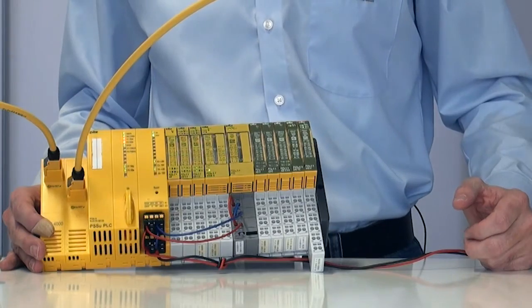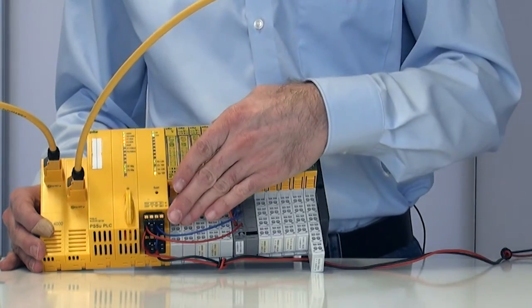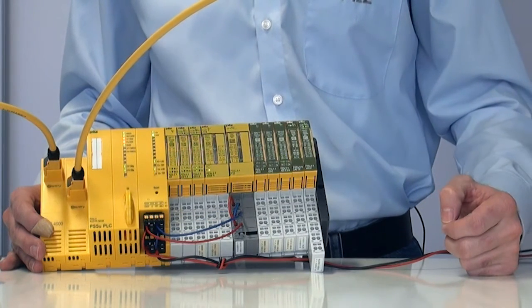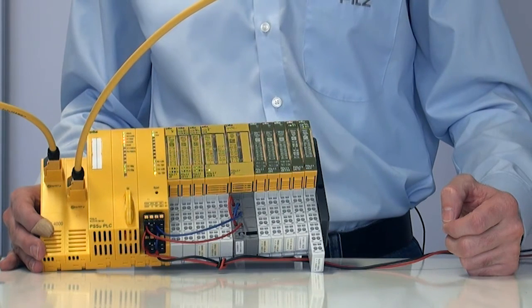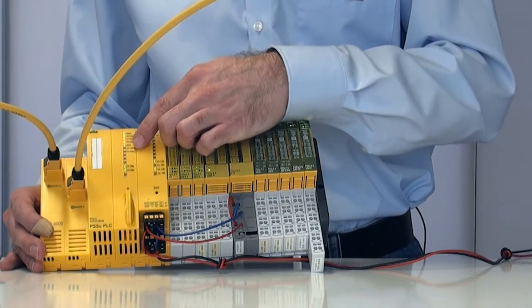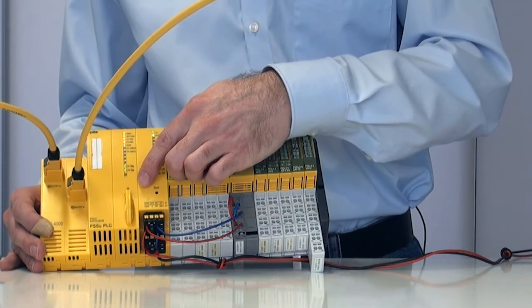The head module contains the supply voltages for the module and periphery supply. The two voltages are galvanically isolated. The LEDs on the head module display details of the system status as well as various internal states.